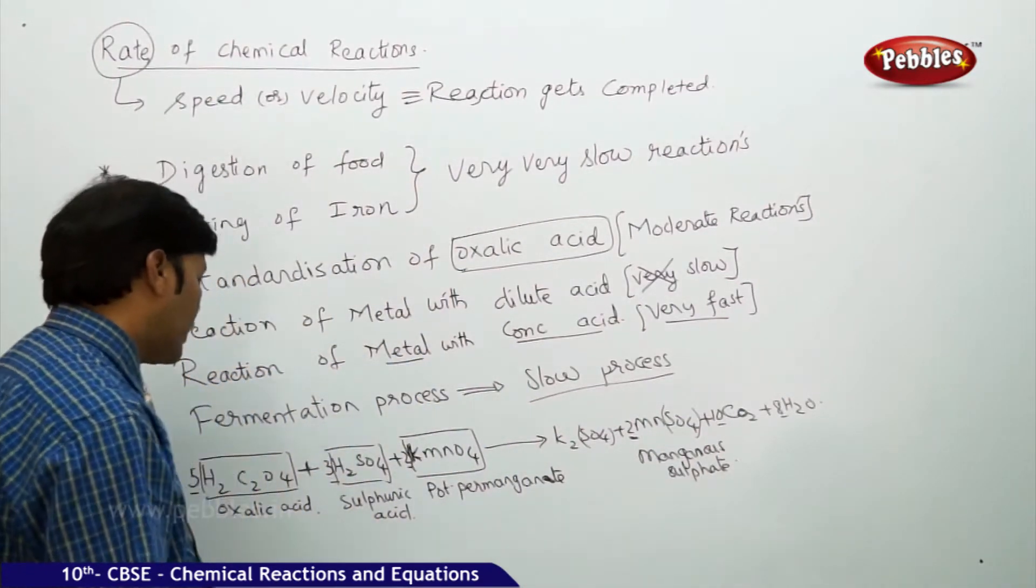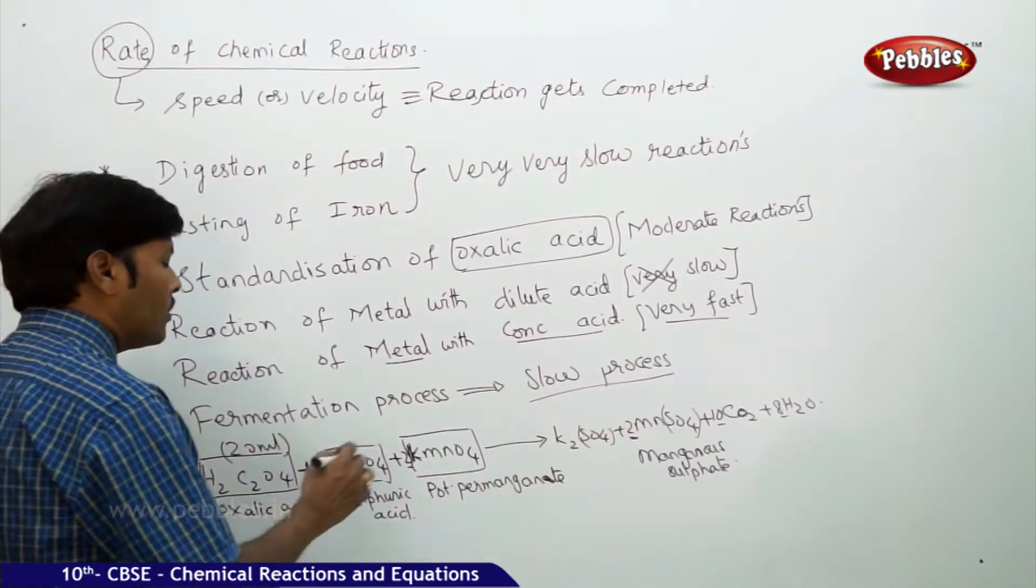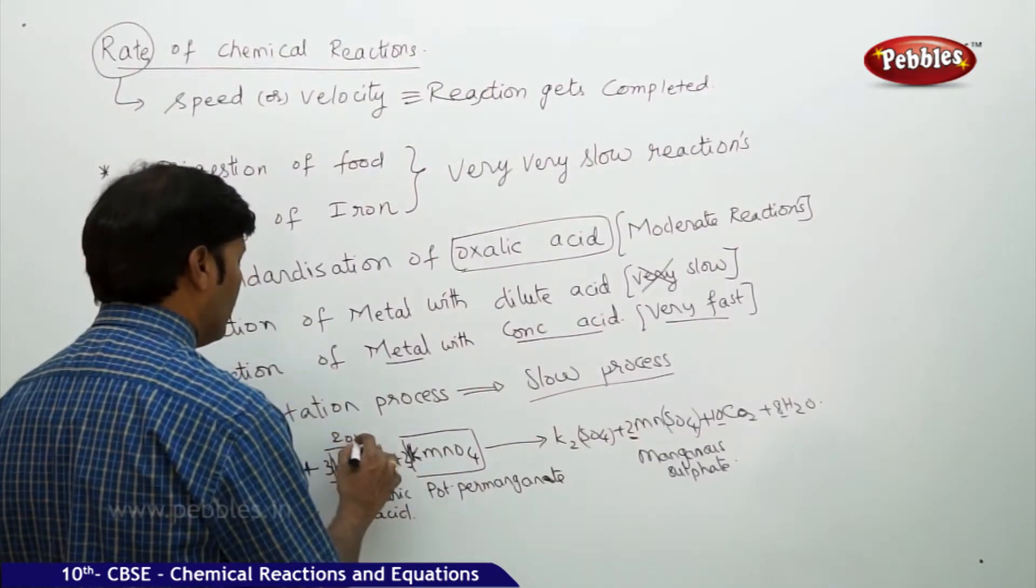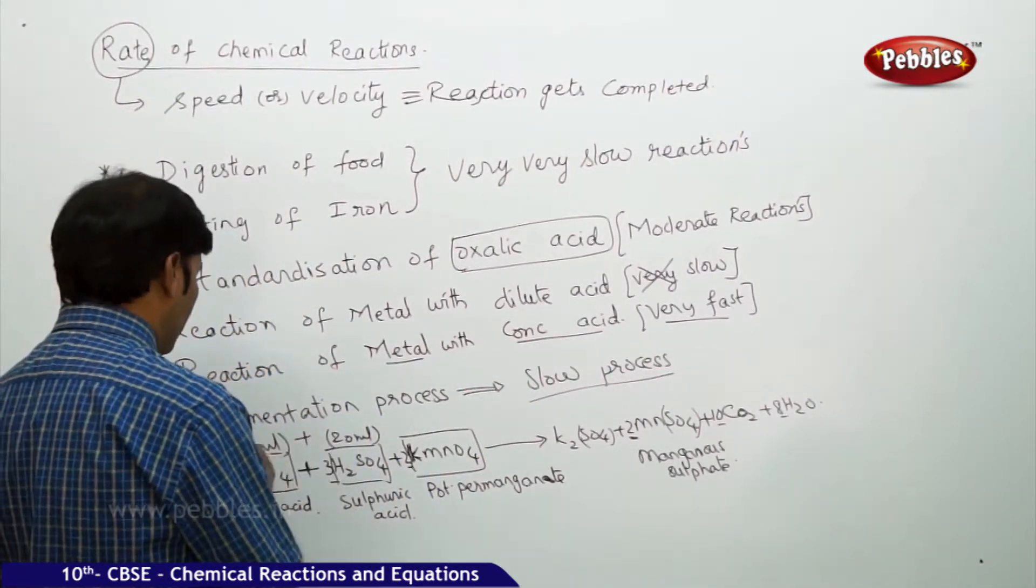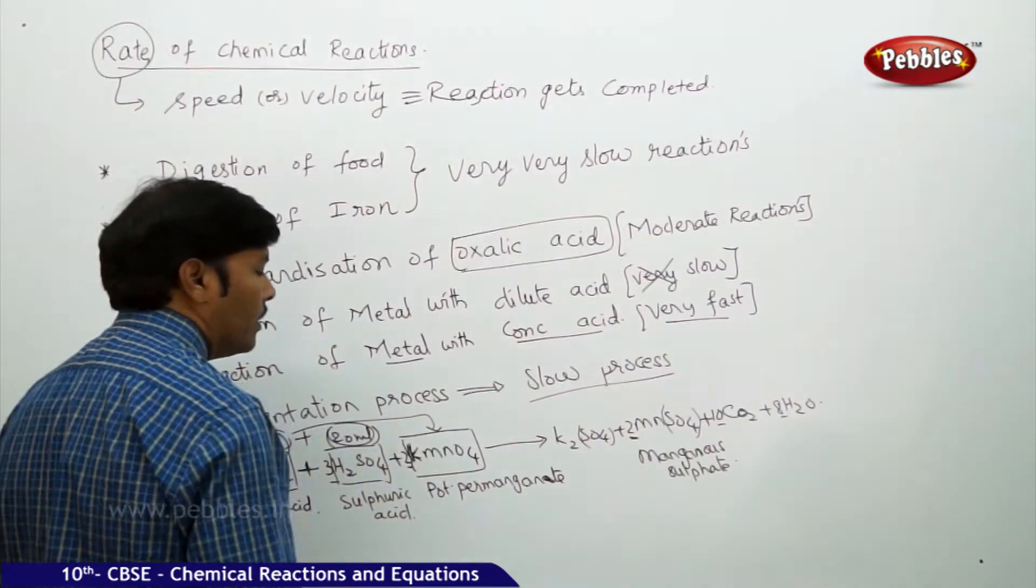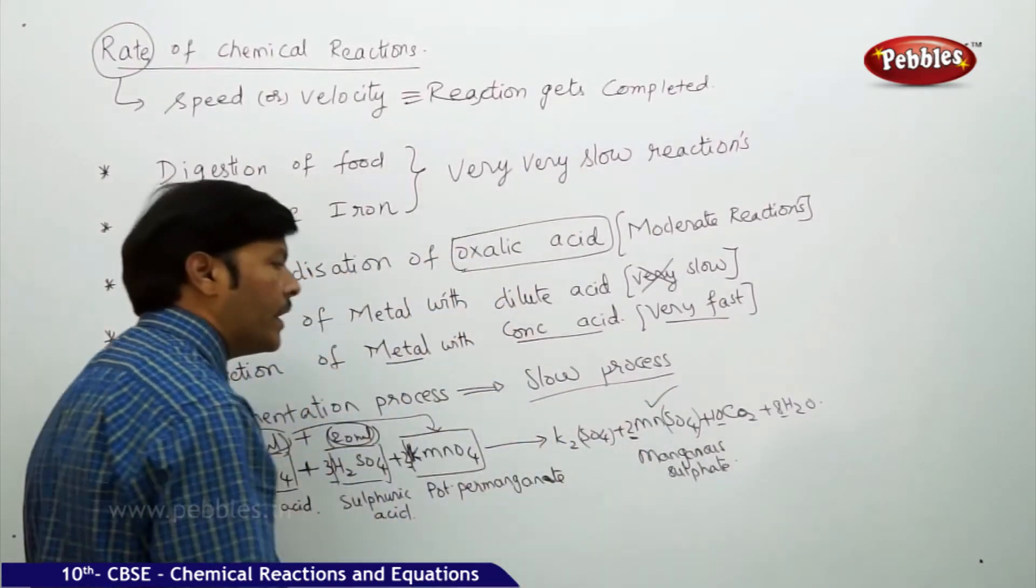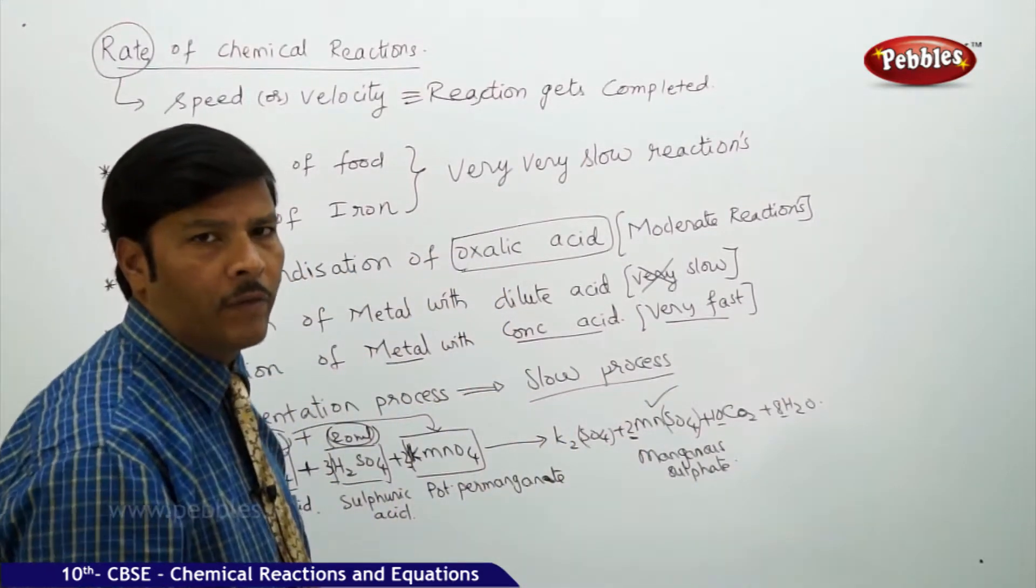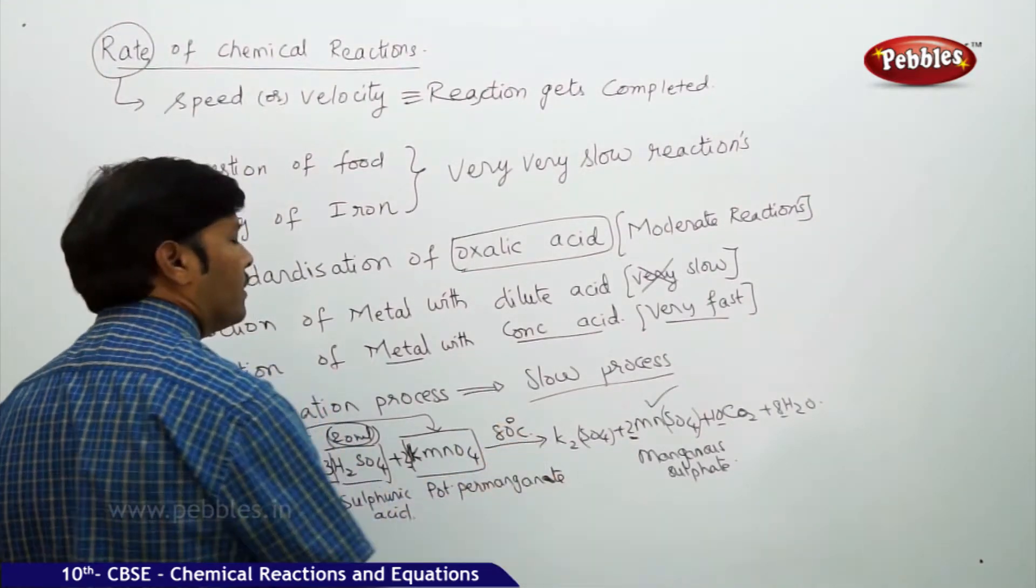So for this reaction to take place, we take 20 ml of this and 20 ml of this, and we just titrate with KMnO4, and that will result in the formation of manganous sulfate. It will take half an hour or 45 minutes of time. The temperature operates at around 80 degrees centigrade. So this is a perfect example of moderate reactions.